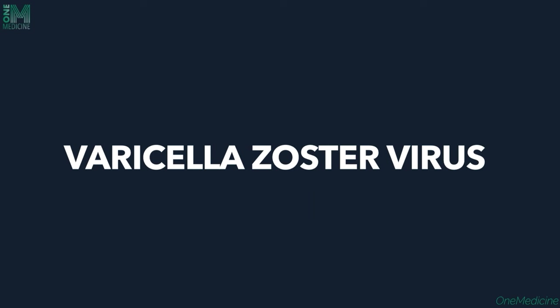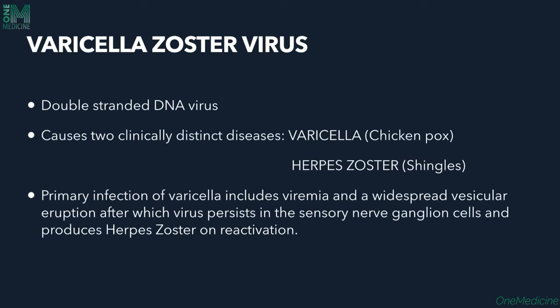Today we'll talk about Varicella Zoster Virus, which is a double-stranded DNA virus that causes two clinically distinct diseases: Varicella (chicken pox) and Herpes Zoster (shingles). The primary infection of Varicella includes viremia and widespread vesicular eruption, after which the virus persists in the sensory nerve ganglion cells. Upon reactivation, it produces Herpes Zoster.